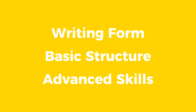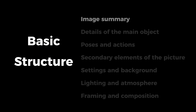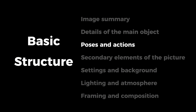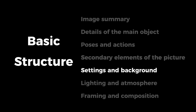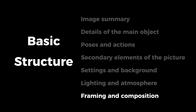You already know how to write a good prompt. Now it's time to learn about the structure of a prompt. A good prompt can be divided into seven parts: image summary, details of the main object, poses and actions, secondary elements of the picture, settings and background, lighting and atmosphere, and framing and composition.